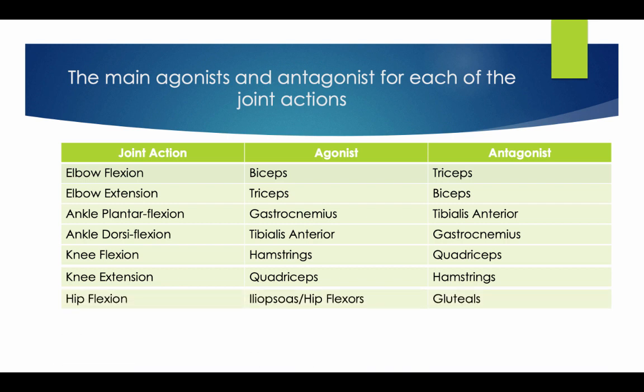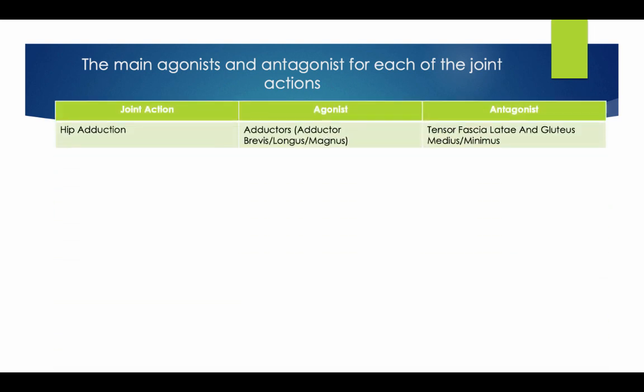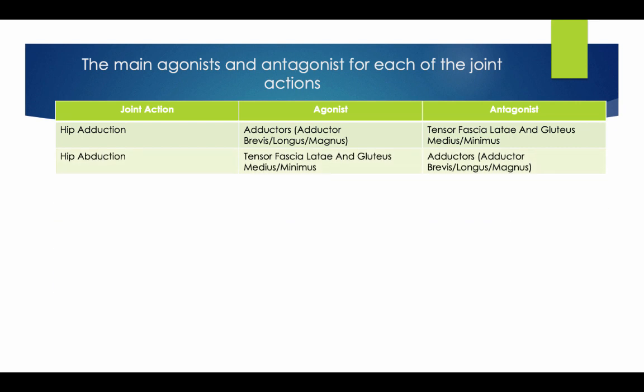For hip flexion, the agonist is the iliopsoas/hip flexors and the antagonist is the gluteals. For hip abduction, the agonist is the adductors — brevis, longus, and magnus — and the antagonist is the tensor fasciae latae and the gluteus medius and minimus. For hip adduction, the tensor fasciae latae and gluteus medius and minimus are the agonist, and the adductors — brevis, longus, and magnus — are the antagonist.